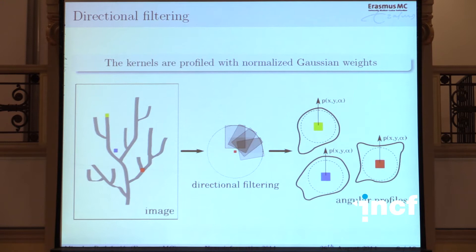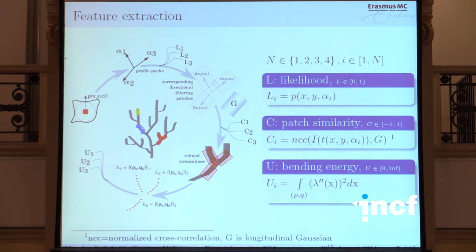For that we use a standardized procedure in image analysis: feature selection, feature extraction, and detection. The first module is directional filtering — a basic module where you take the locations of interest and apply a set of oriented kernels with Gaussian weights. With that you get what we call angular profiles, which are a unique signature description of each location in the image. From the angular profile, an optimization procedure detects up to three or four angles, and the first feature is called likelihood — the value of the angular profile at that particular direction.